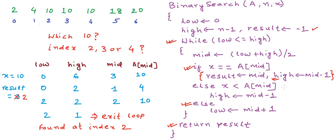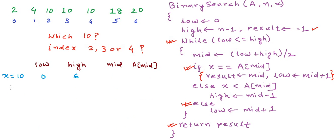To find the last occurrence, there will be only a slight modification. When we find x, instead of adjusting high to mid-1 to search left, we search towards the right — towards higher indices — by adjusting low to mid plus 1. This is the only change needed to find the last occurrence. In the simulation for this version: low=0, high=6, result=-1. Mid=3, A[3]=10 — result becomes 3, and low becomes mid+1 which is 4.